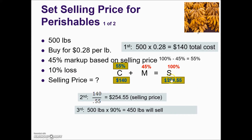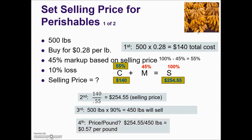That leaves us with determining our last step: the price per pound. The total selling price is the amount of money needed to accomplish the markup goal. We know 450 pounds will sell, so to find the price per pound, we take the total selling price divided by the total number of pounds that will most likely sell, giving us a selling price per pound of $0.57.